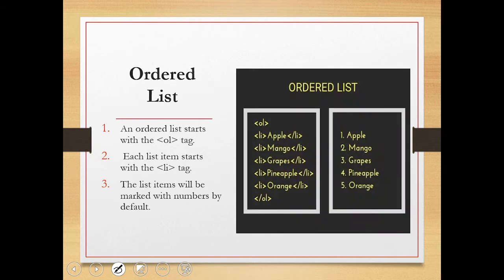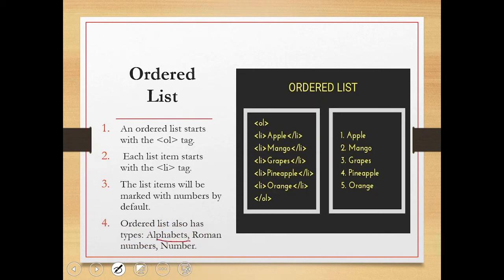Using the same fruit example converted to an ordered list, we can see the output comes in the format of 1, 2, 3, 4. By default, ordered lists use the number format. We can also give the type attribute with ol. The options include alphabets — capital A or small a. For capital A, we write type equal to A; for small letters, we write small a.